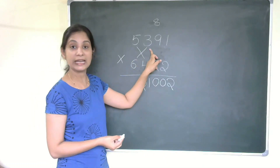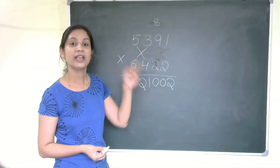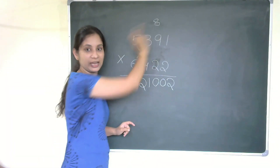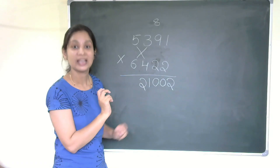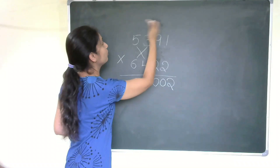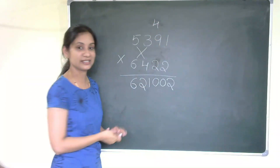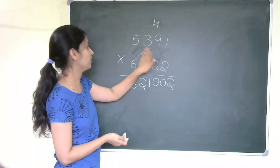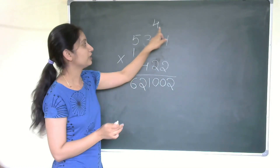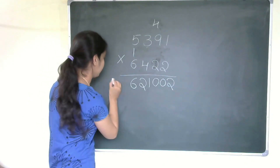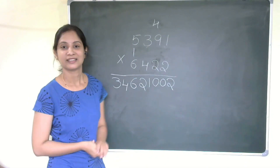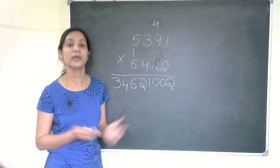Step six: five fours are twenty, plus six threes are eighteen — twenty plus eighteen is thirty-eight. Plus carry-over eight is forty-six. Write six, carry over four. Step seven: five sixes are thirty, plus carry-over four is thirty-four. Write thirty-four. You have now solved the multiplication of a four-digit number using the crisscross method very quickly!